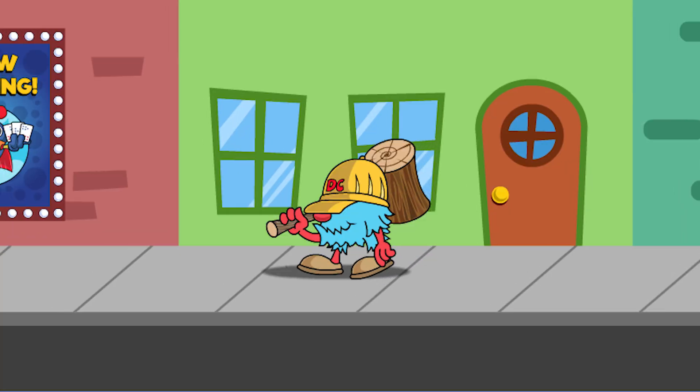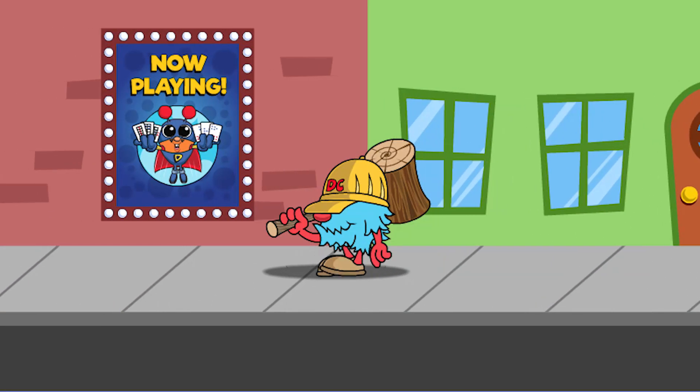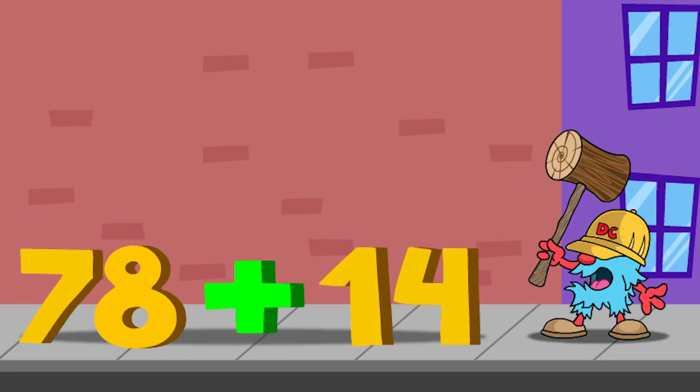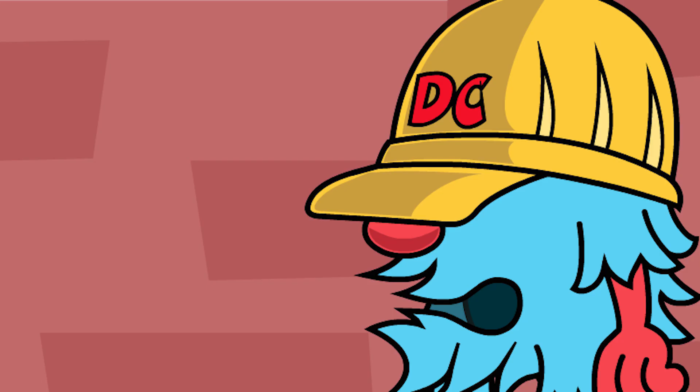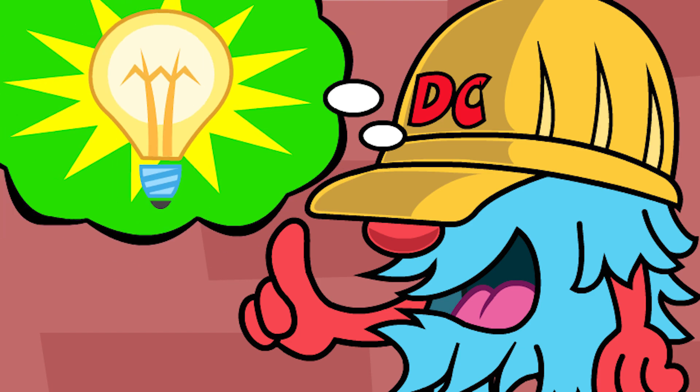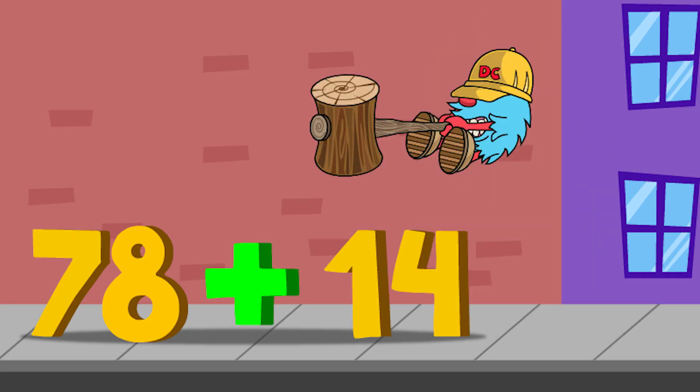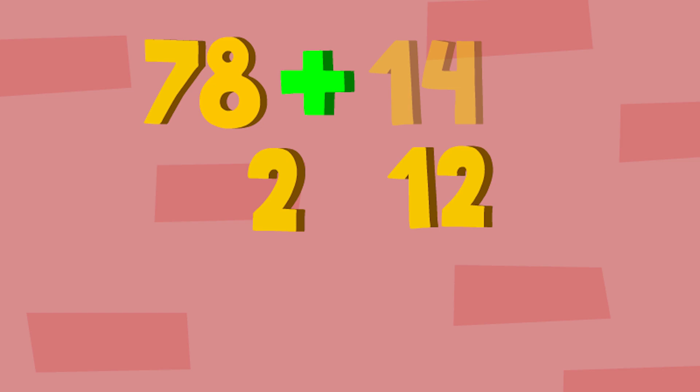D.C. can also do math with larger numbers. Watch out, D.C. 78 plus 14 do not look like friendly numbers to add. He has an idea. He's going to take his mallet and smash the number 14 to decompose it into 2 and 12. I wonder why he decided to decompose 14 into 2 and 12.